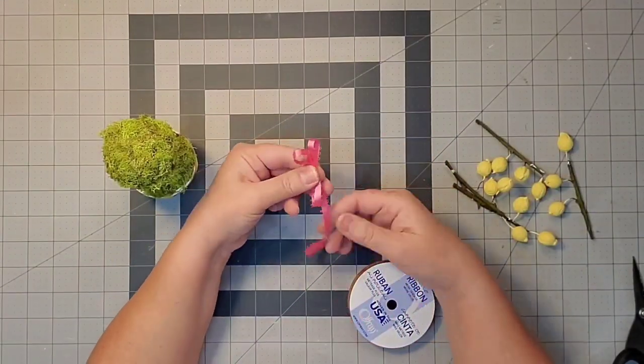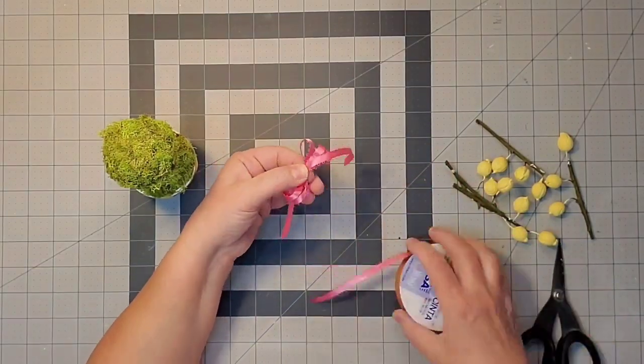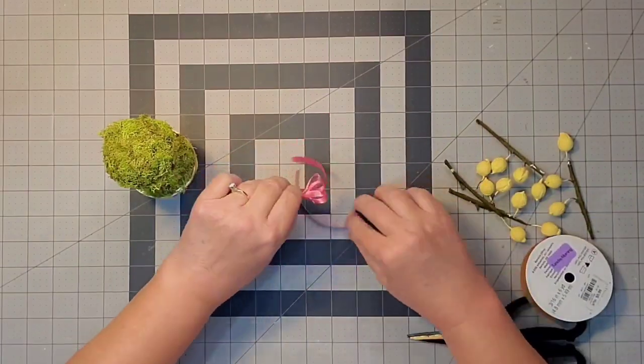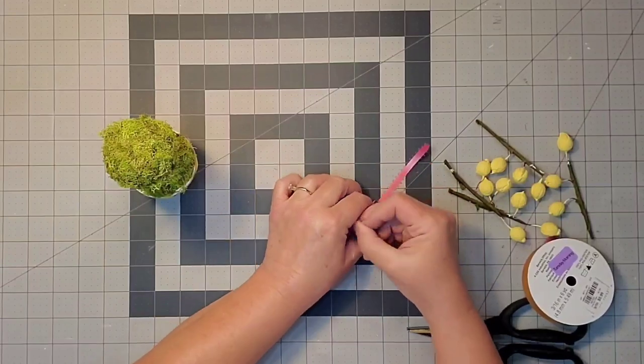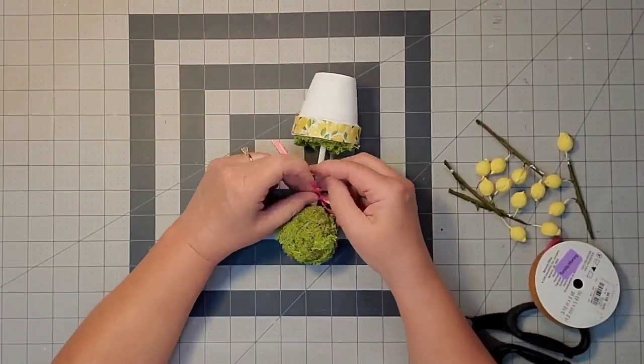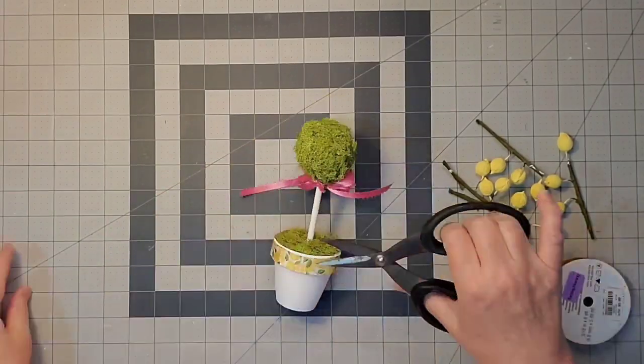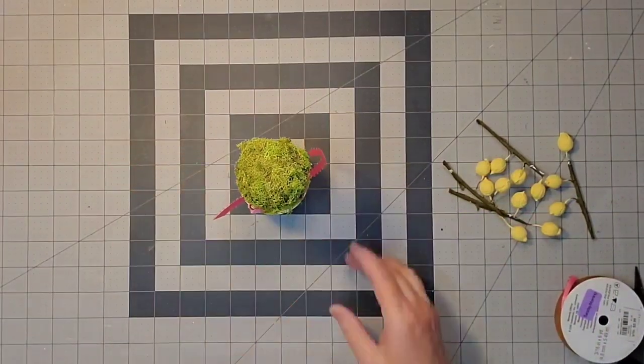Now I'm shaping a bow out of this pink ribbon, about three loops on each side. I'll use another piece of ribbon to tie around the middle, trim it up, and tie it to my dowel using hot glue to secure it.